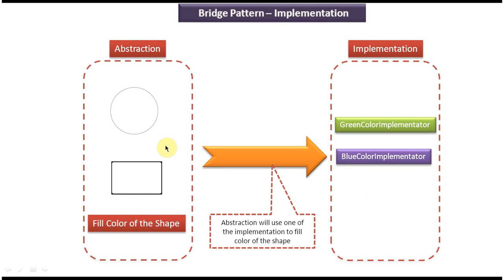Similarly, in the abstraction layer, if I want to add a new shape like a triangle, I can do that without affecting the implementation layer. This is the best example of the bridge design pattern.